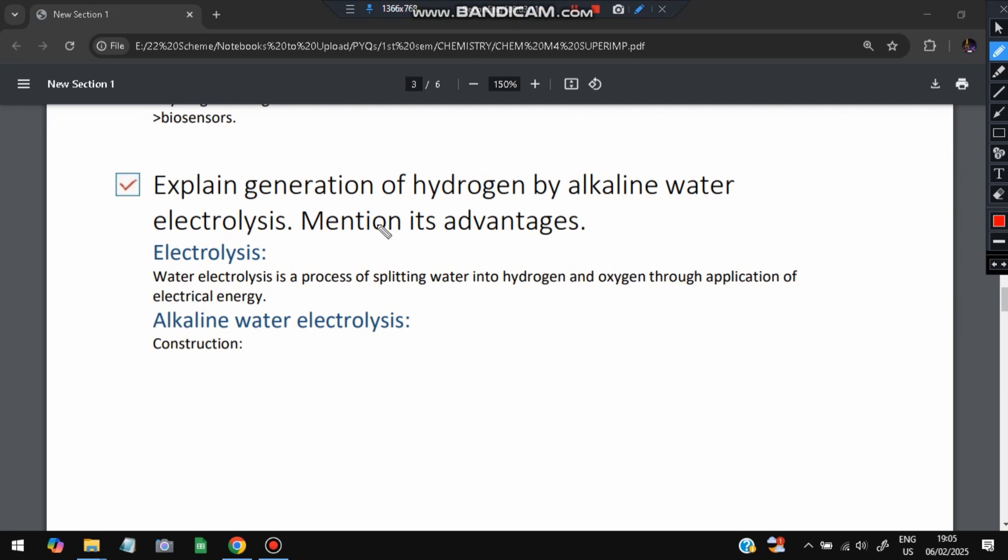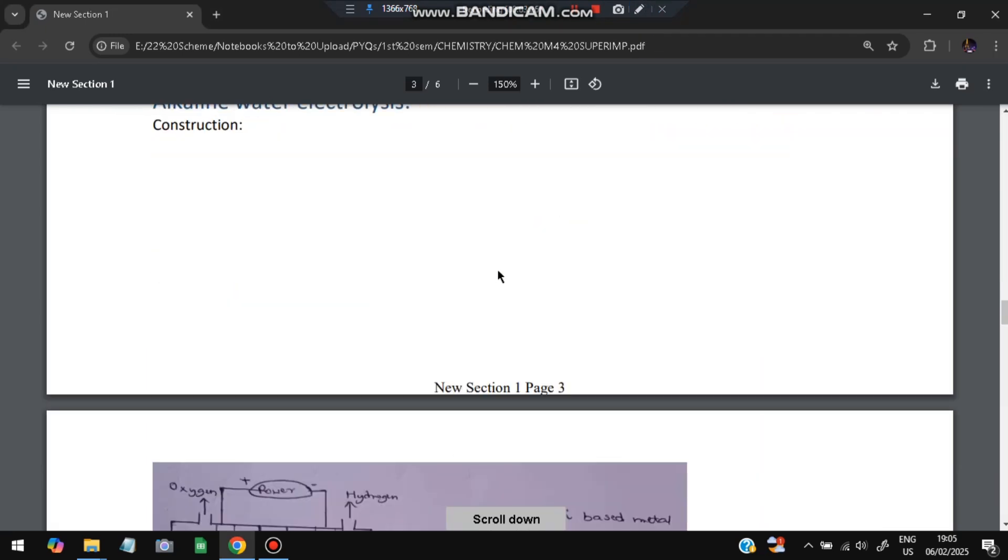Next is explain the generation of hydrogen by alkaline water electrolysis, mention its advantages. When we convert hydrogen from the water, like H2O becomes H and O, separating the H and O from the water, it is called as electrolysis. So alkaline electrolyte water electrolysis, the diagram is as follows.